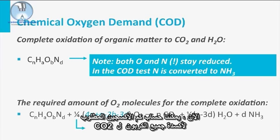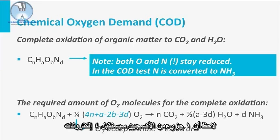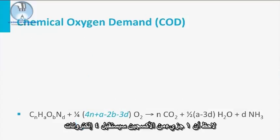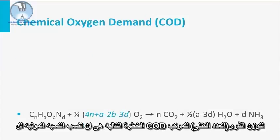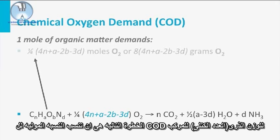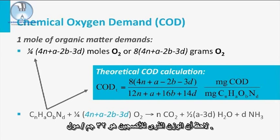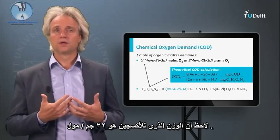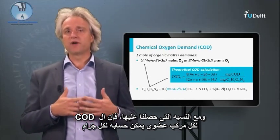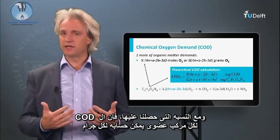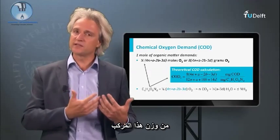Now we can calculate how much oxygen is required to oxidize all carbon to CO2. Note that one molecule of oxygen will accept four electrons. The next step is to couple the COD molar ratio to the mass weight of the compound. Note that the molar weight of oxygen is 32 grams per mole. With the obtained ratio, the COD of every organic compound can be calculated per gram weight of that compound.